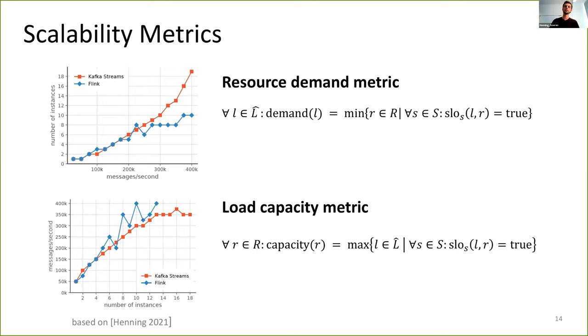We have here two examples from one of our benchmarking studies where we compared Kafka Streams and Flink. Our load intensity is messages per second where we increase the messages per second with different keys. And our resources are the number of instances. We can see that for Flink, the amount of required instances is growing not as fast as for Kafka Streams. In theory, both metrics are inverse to each other, but that's not always the case. And I can give an example on this in a couple of minutes.